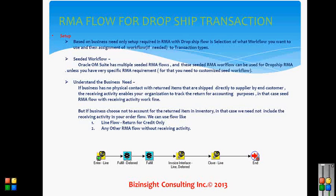The second step covers seeded workflows. We have a lot of RMA flows seeded and shipped with the product, so there is a possibility that one of the seeded workflows will fulfill your requirement for the dropship and is already associated with the transactions. In that case, you just use that transaction while doing the RMA flow for dropship. But if you have a specific business need not fulfilled by the seeded RMA workflow, then you have to customize the flow as per your need.